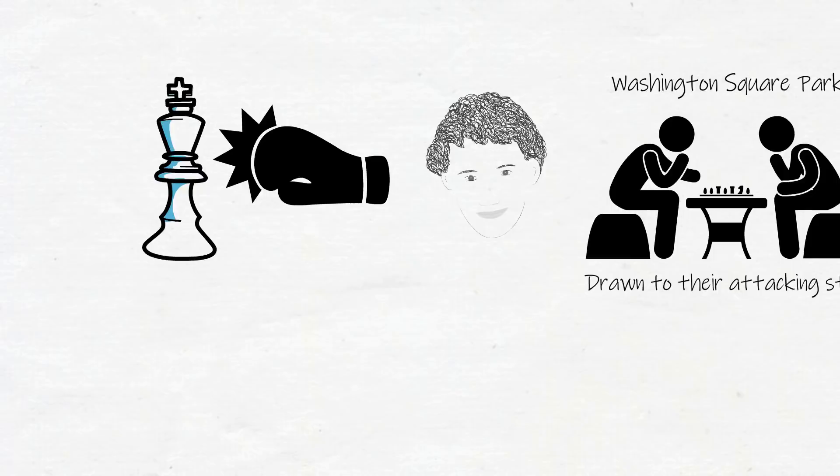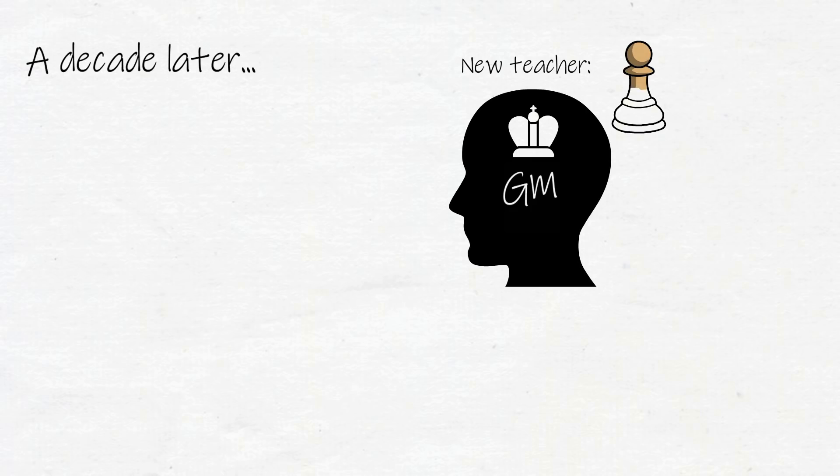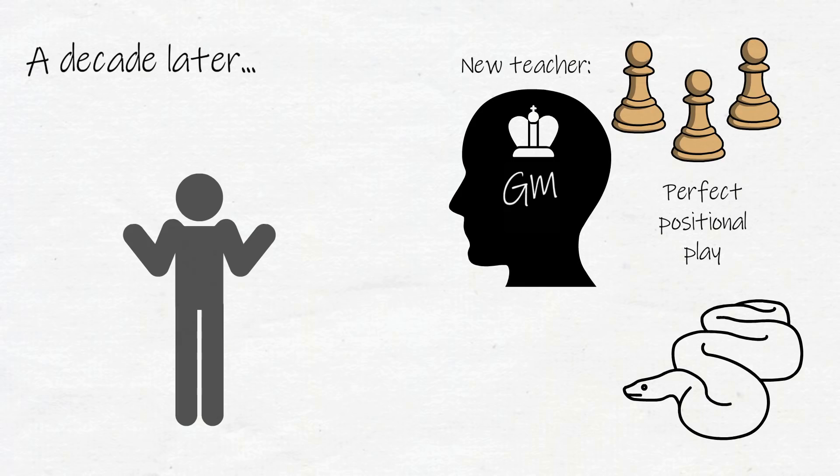But in his late teens, he put his faith in a grandmaster who had a very different style—a style of chess that suffocated the opponent by eliminating their options with perfect positional play. Josh likened it to an anaconda coiling around its prey, slowly killing it.